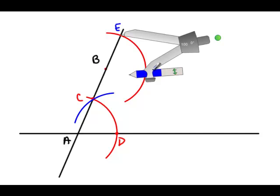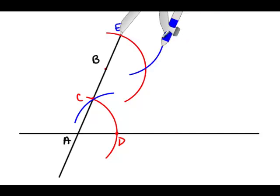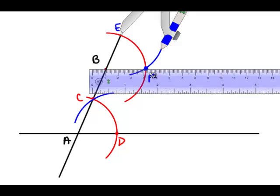With my compass point on point B, I will make an arc with radius CD. And the place where those two arcs intersect, the red and the blue, will be the second point that I'll connect to B. And that line will be parallel to the original line.